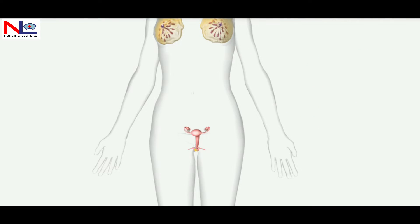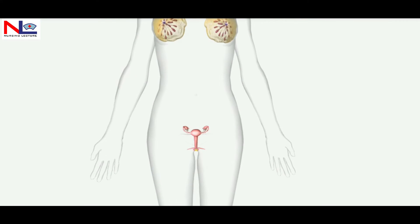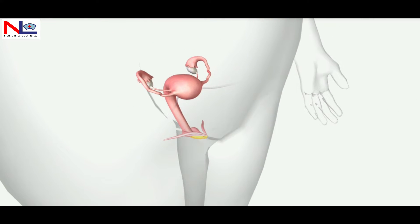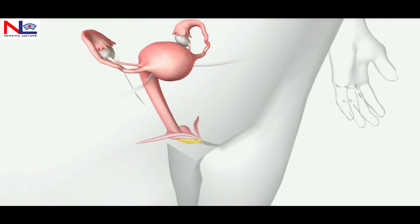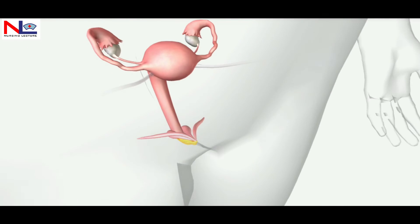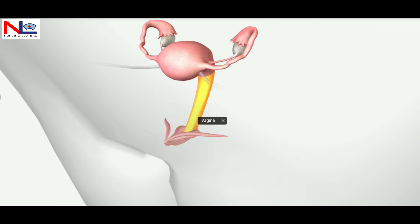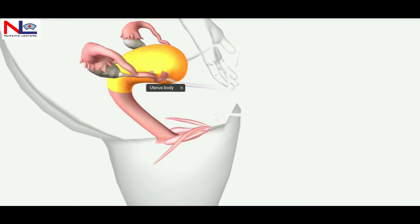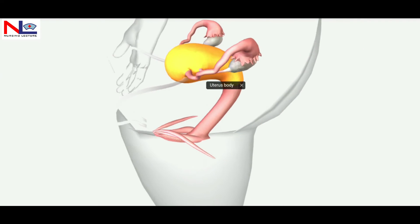The second part is internal genitalia. It consists of all the organs placed internally. These are the vagina, a fibromuscular tube that connects the uterus to the exterior. Next is the uterus, which accommodates the fetus and is the site for menstrual flow when fertilization does not take place.